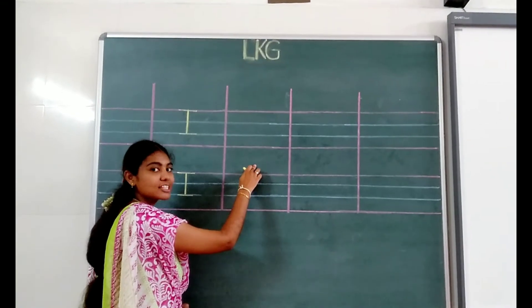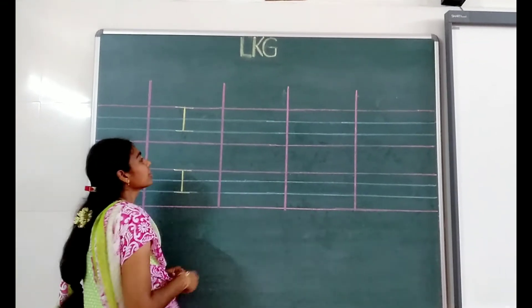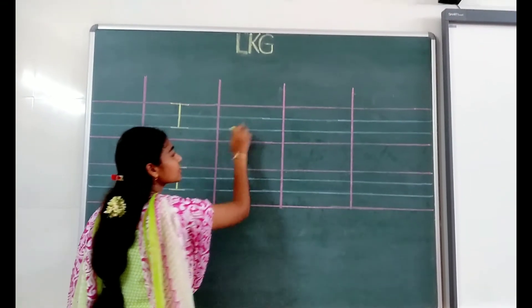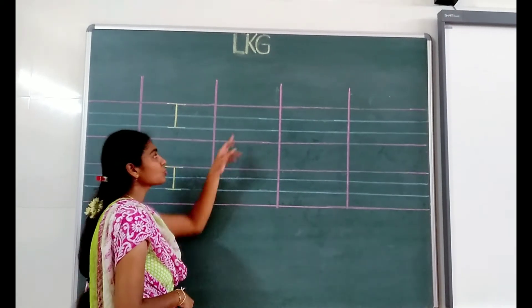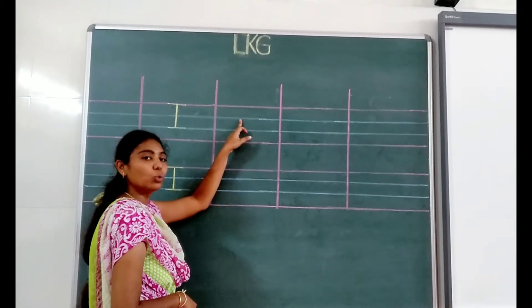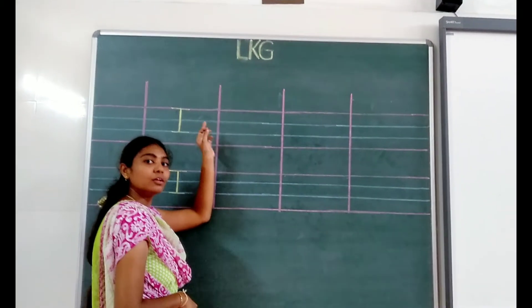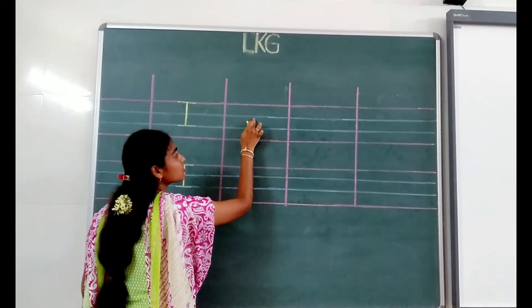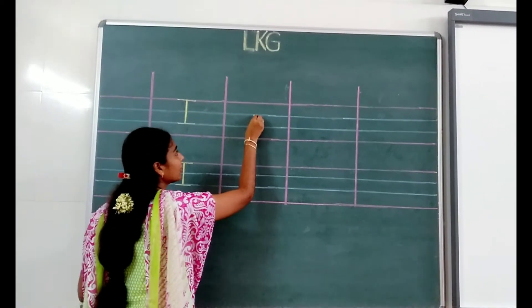Now we are going to write small I. When writing small letters, where you have to start? You have to start from the blue line. Some letters will start from the blue line. Small I also will start from the blue line.